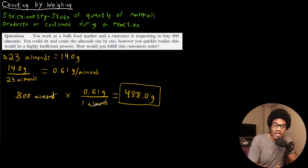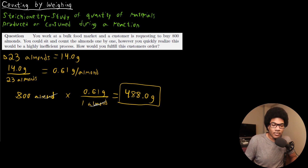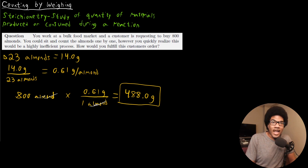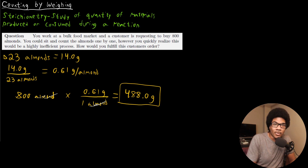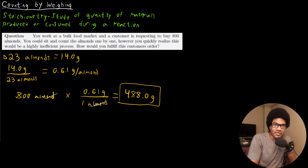How does this relate to chemistry? We basically employ this exact same type of logic when we're thinking about atoms. Atoms are really, really small things that we can't pick out one by one in order to see how many atoms are in a sample of water, for example. So we have to use atomic masses in order to get the average mass of a particular atom or molecule, and then use that to convert from our macroscopic sample — which might be five grams of water — to how many atoms we have.